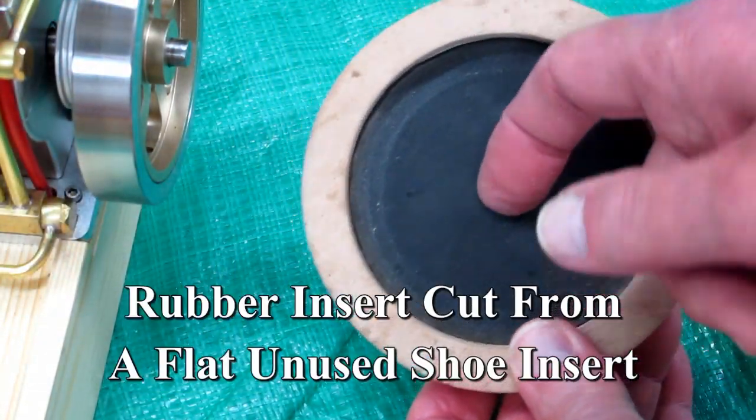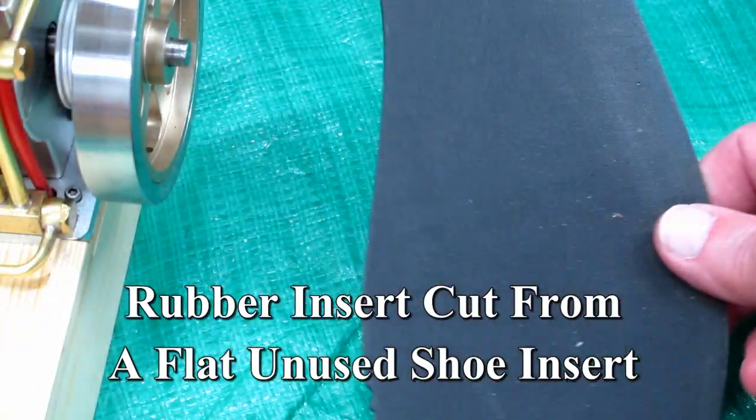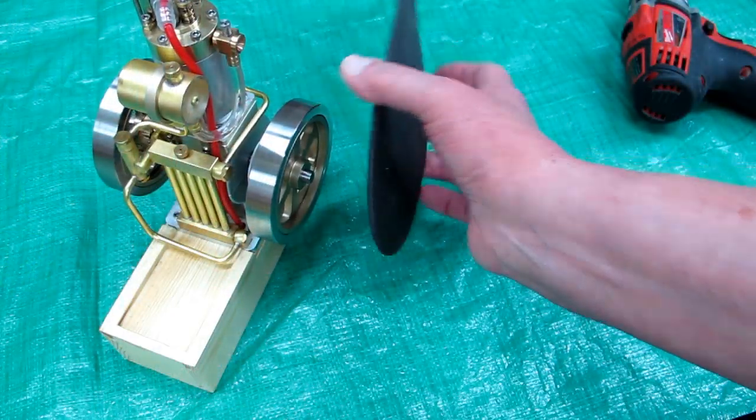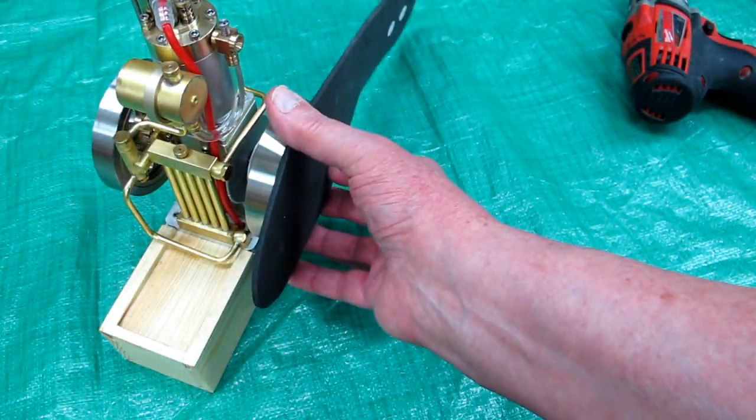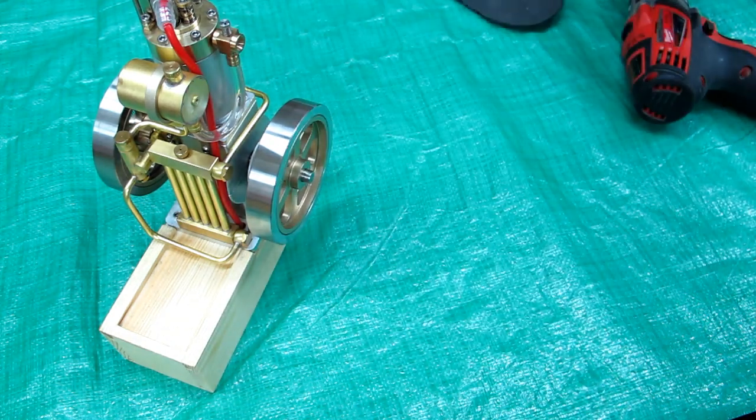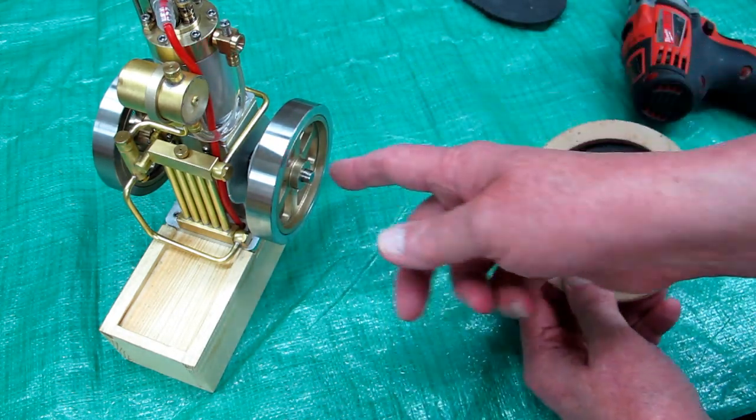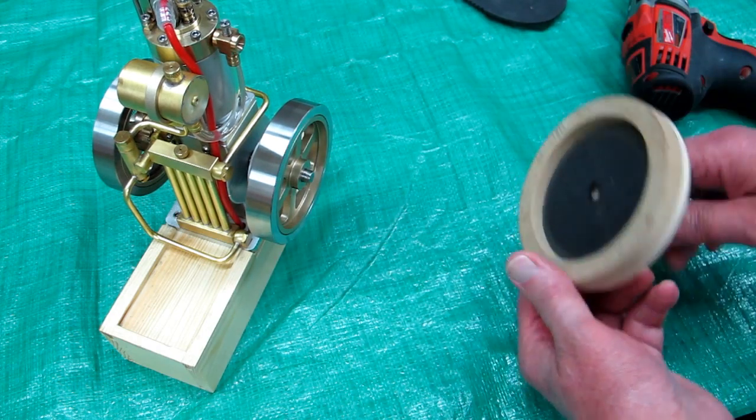This inside piece of rubber is cut from a flat, unused shoe insert. I use the flywheel to draw a circle around this to cut it out, and there has to be a little indentation in here to clear this piece of the crankshaft that's sticking out.